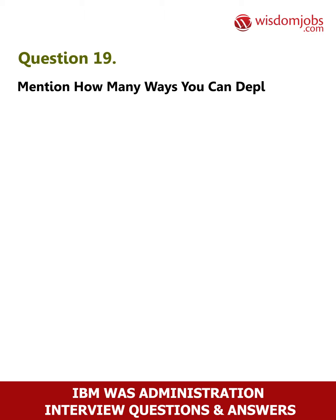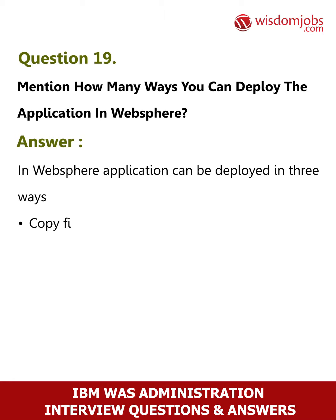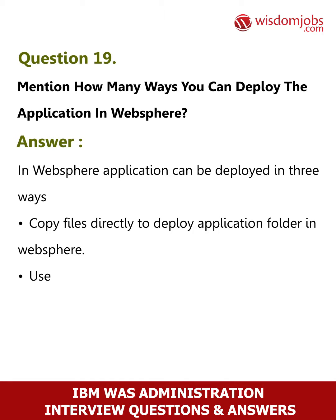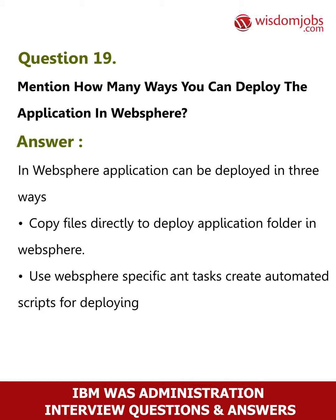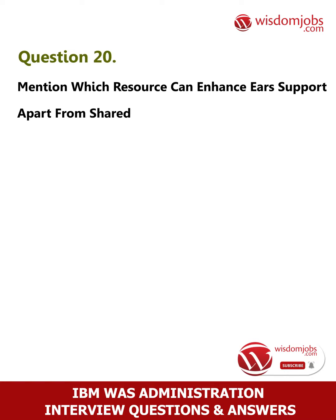Question 19: Mention how many ways you can deploy an application in WebSphere. Answer: In WebSphere, an application can be deployed in three ways: copy files directly to the deploy application folder in WebSphere, use WebSphere-specific Ant tasks, or create automated scripts for deploying the application via the administration console.